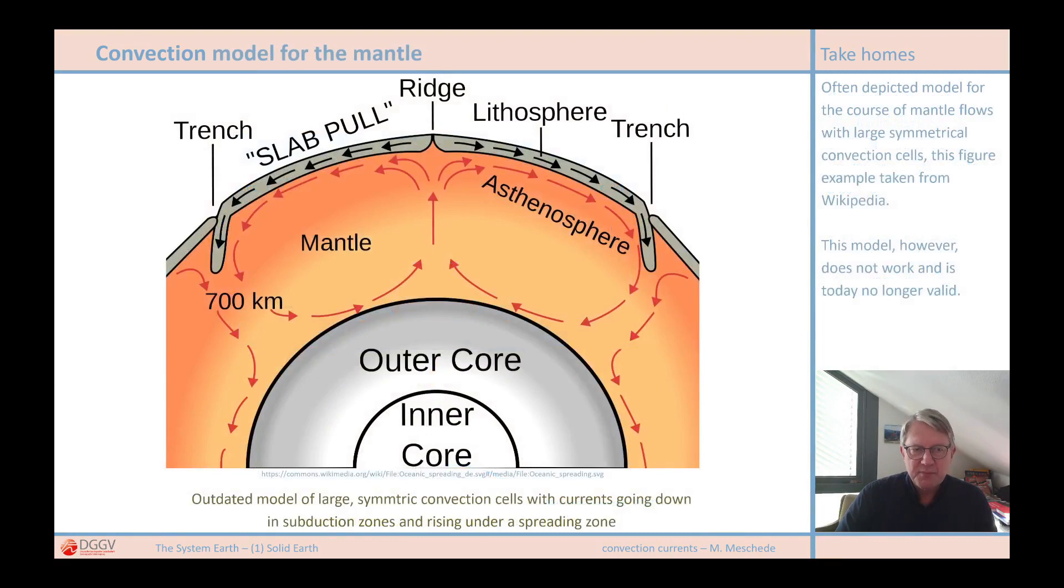Such as this example from Wikipedia, which can be found under the keyword mantle convection. All of these representations have in common that they show the convection currents in the Earth's mantle as huge convection cells that go through the entire mantle and bring the hot material back up again just below the spreading zone. And as I said already, you will find many, many similar representations in modern textbooks or in video clips, some of them even animated.